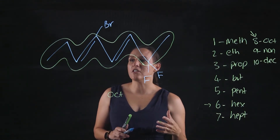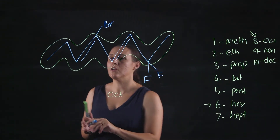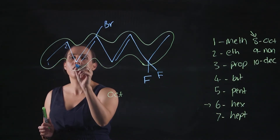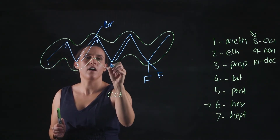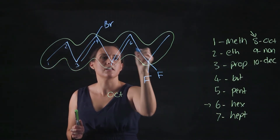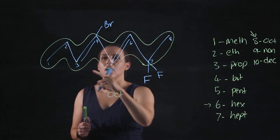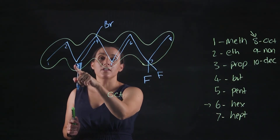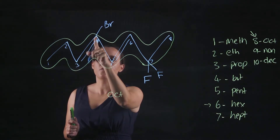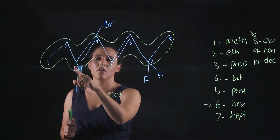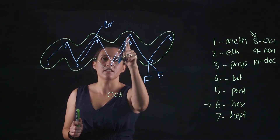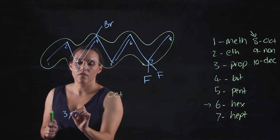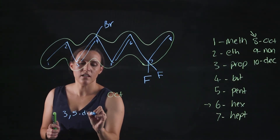If I number from this way — one, two, three, four, five, six, seven, eight — I can label these double bonds. You put the smallest number: the first double bond goes from three to four, so it's a three; and five to six would be a five. So I've got a 3,5-diene.